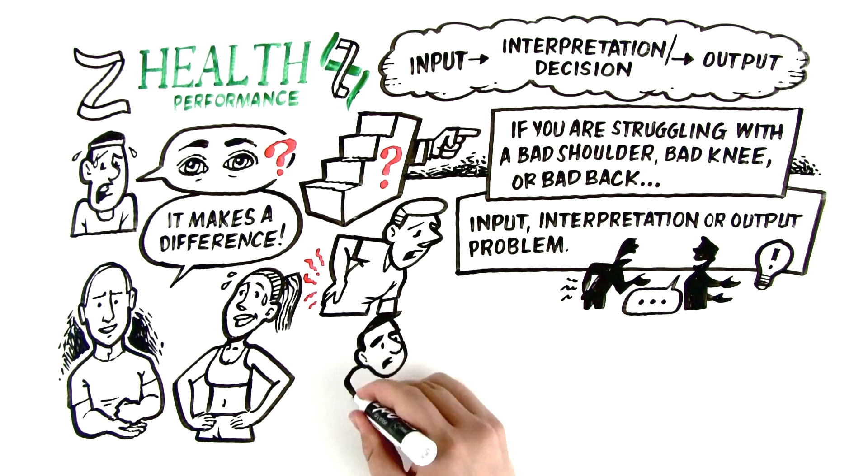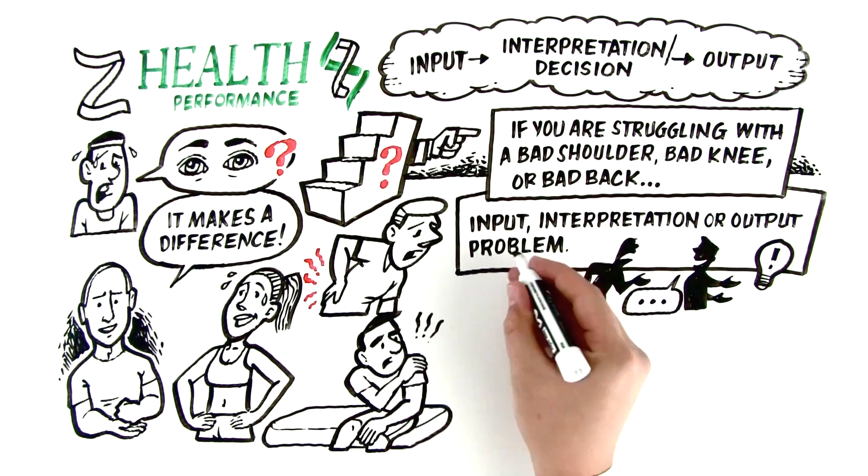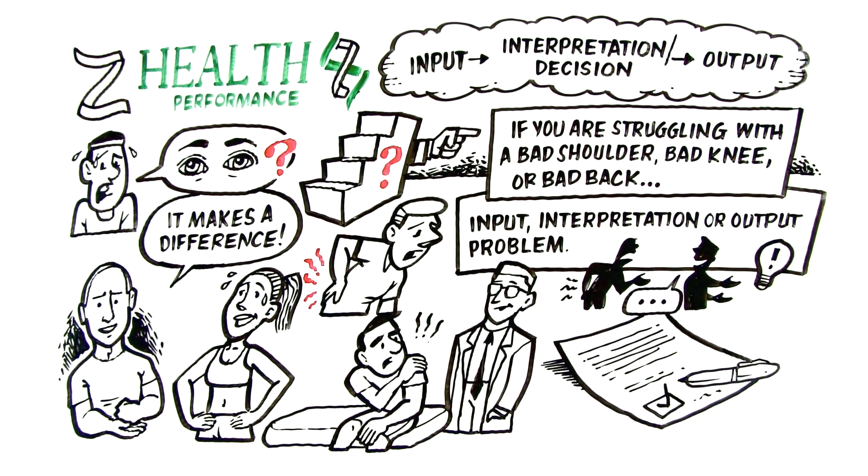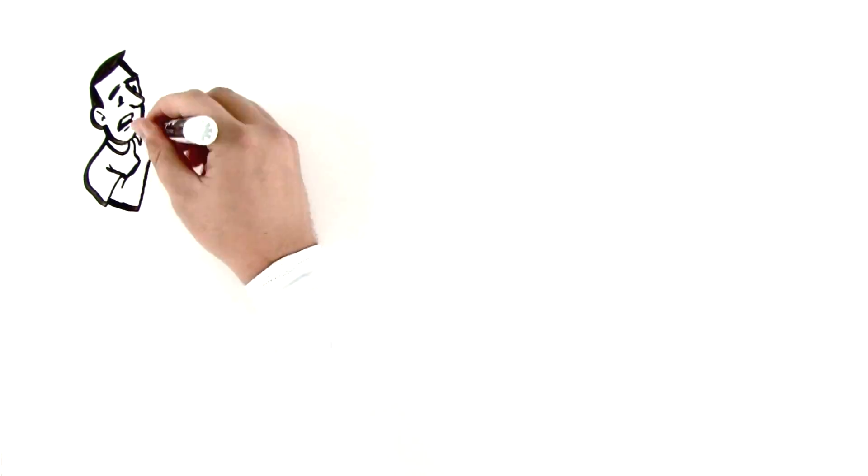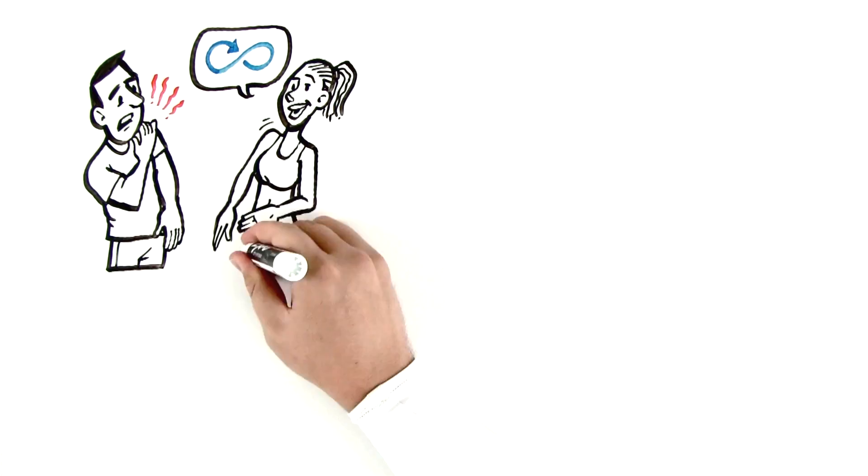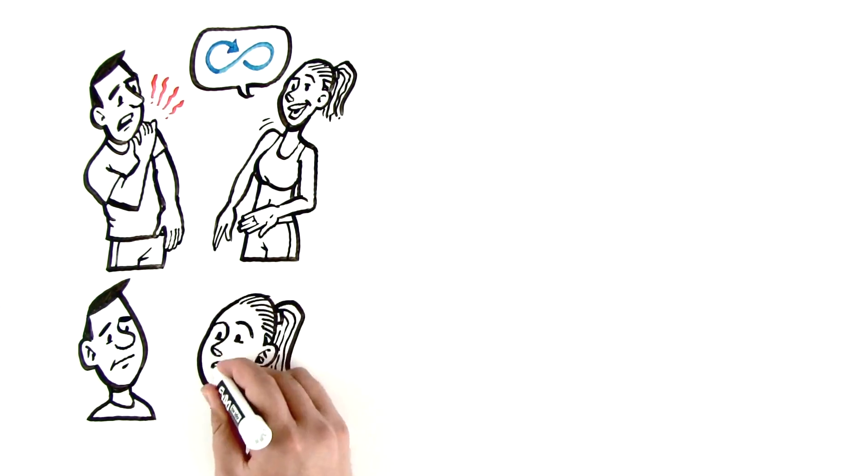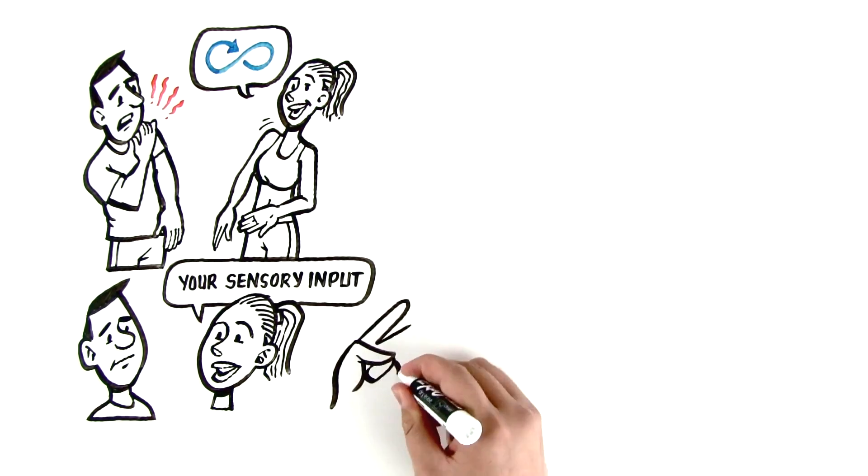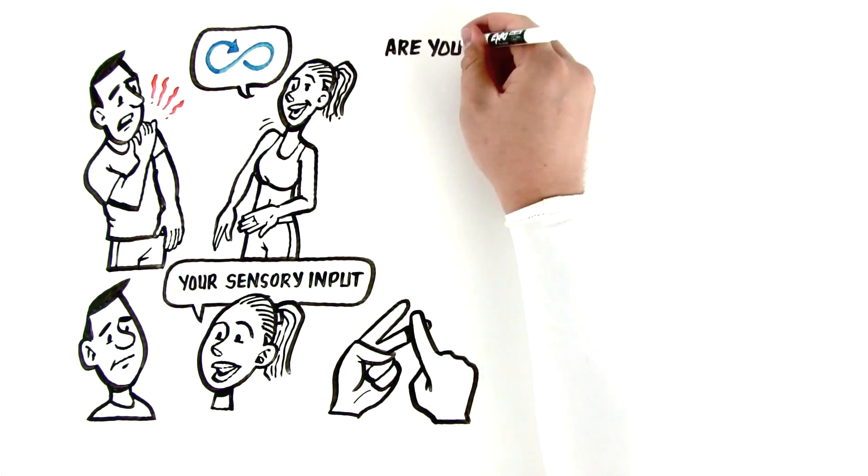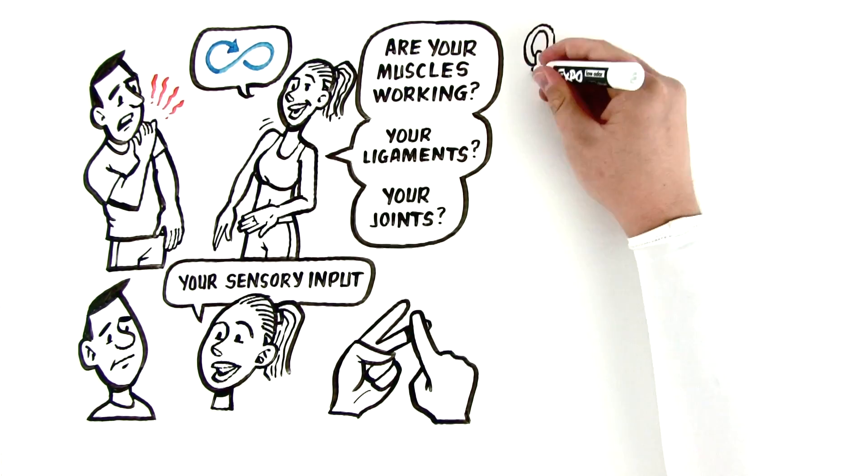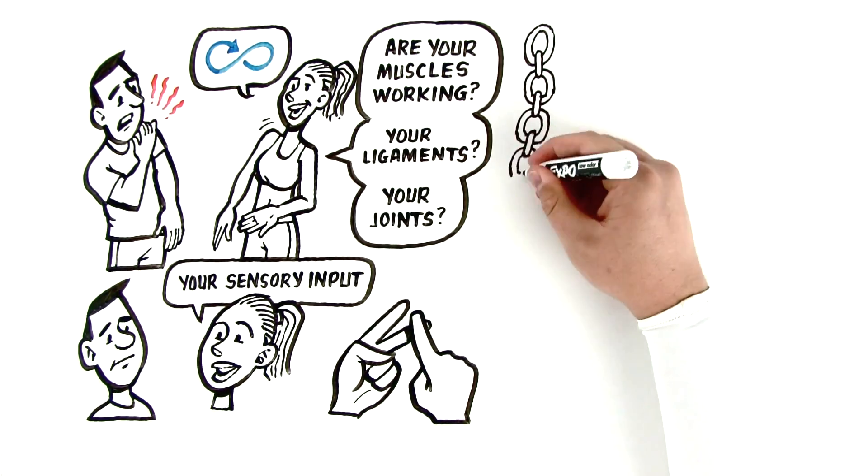So my recommendations are this. If you've been dealing with any kind of chronic issue, number one, make sure that you don't have anything bad that will kill you. That means go to your doctor, go to your healthcare professional, and get cleared for exercise. That's super important. But then, if you're looking to work on these things, find someone that's maybe done some training with us, or at least someone that can have this kind of conversation with you that's very clear that says, listen, I need to look at all the different sensory input that you can get. I need to look at how your brain is taking that information in, and then we need to do some tests to see, are your muscles working, are your ligaments working, and all those joints working like they're supposed to, because somewhere in that chain is the answer to your problem.